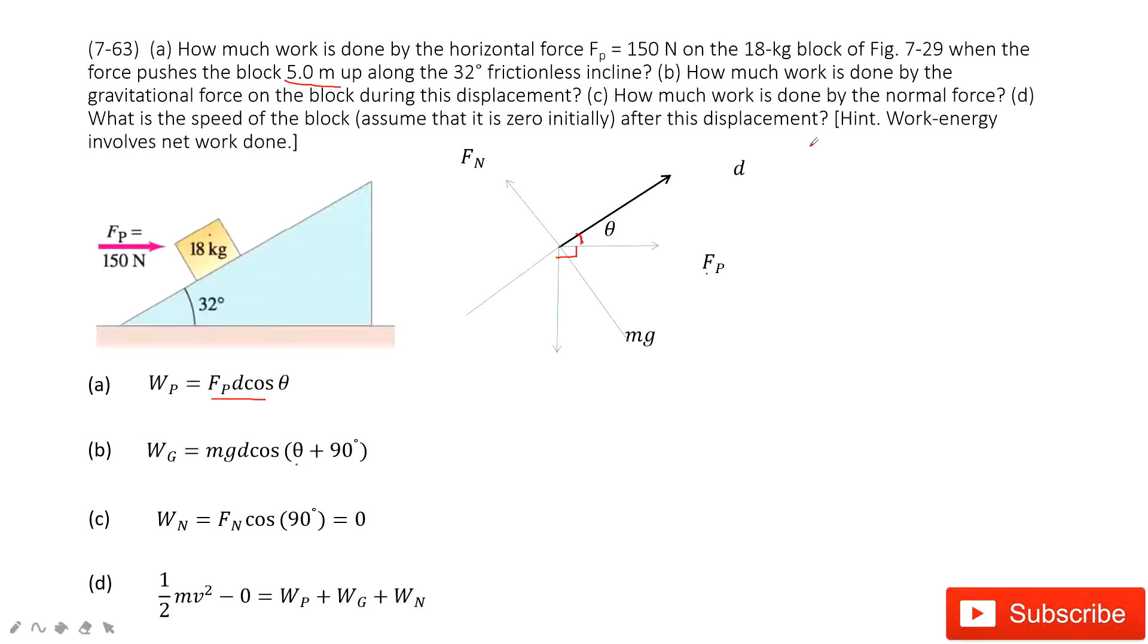The next one, how much work is done by the normal force. So Fn with the d, the angle between them, how much? 90 degrees. Cosine 90 degrees, zero. So just zero. We don't need to do anything.